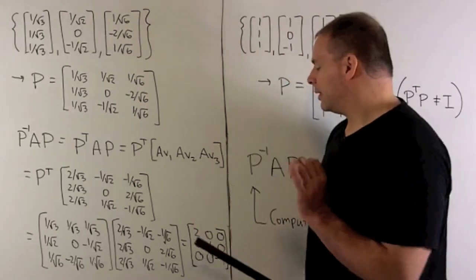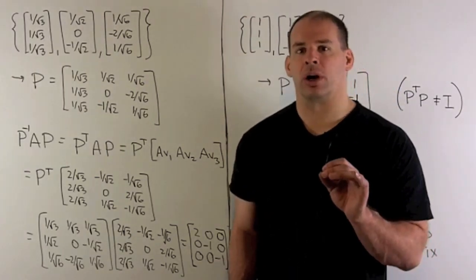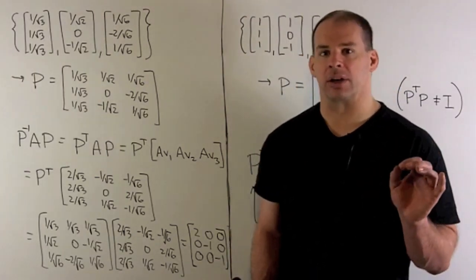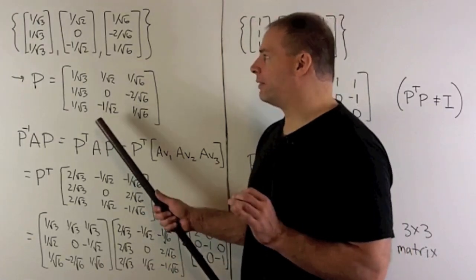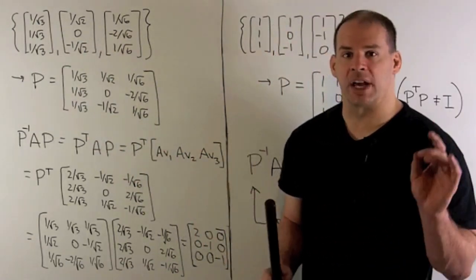Checking our work, these diagonal entries should be our eigenvalues in the same order as our basis of eigenvectors. Here we're going to have 2, minus 1, minus 1, and that checks out our work.